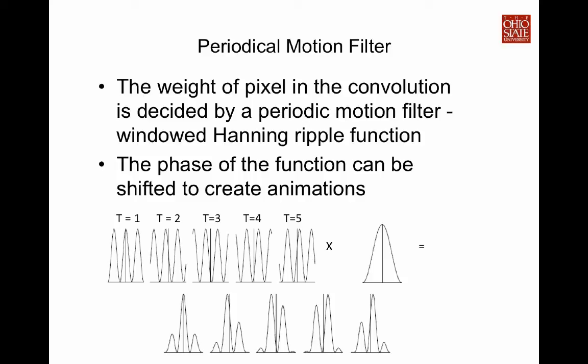And one good thing about using this periodical filter is that you can create animation. Remember, the kernel is produced by multiplying a periodical function by a Gaussian-like window. You can shift the function by changing the phase. Essentially, you are shifting the function forward, and then you create different kernels as shown in the bottom of the slides. And you can apply these different kernels to the same vector field, the same noise. And when you display the sequence of the output, you will create animation.